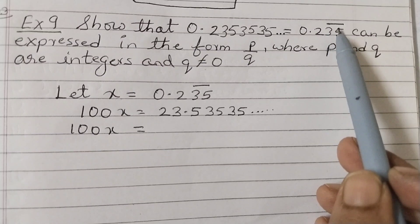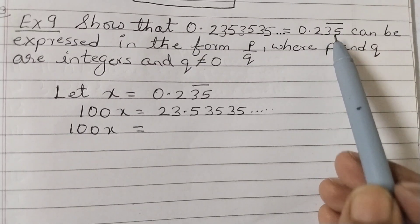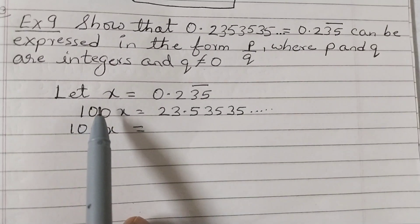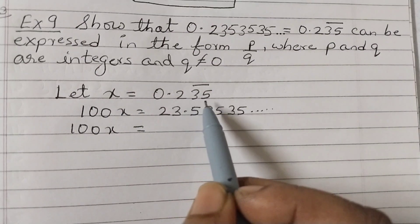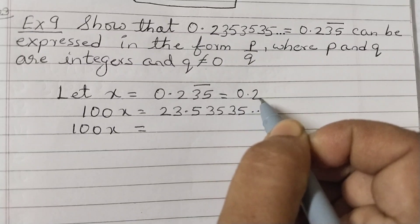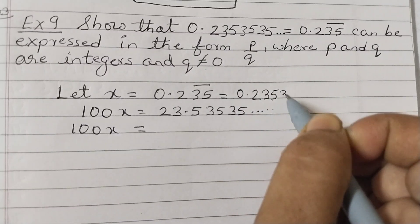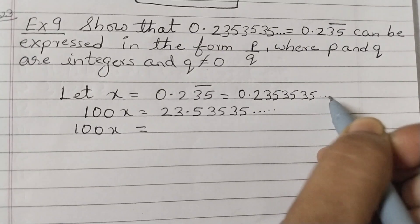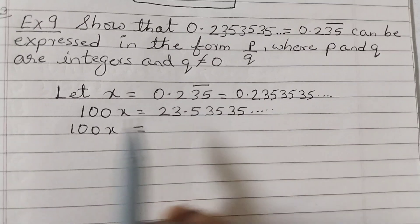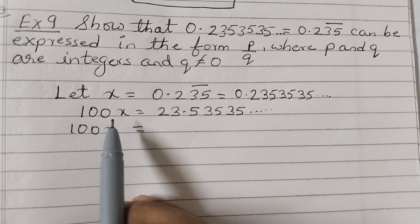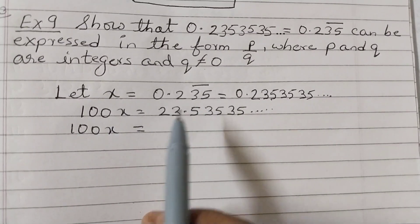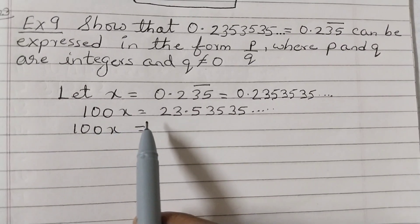A bar is used to show that this number needs to be written in p by q form as a rational number. The first step is: let x equals 0.235 bar, which can be written as 0.2353535... Now since 2 digits are repeating, we will multiply by 100. If 1 digit is repeating, multiply by 10; if 3 digits are repeating, by 1000. So multiply both sides by 100, giving 100x equals...